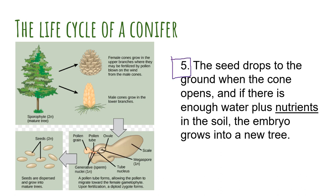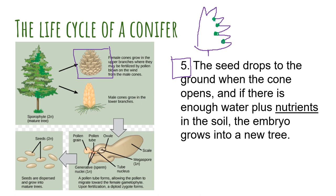Stage five: the seed drops to the ground when the cone opens, and if there is enough water plus nutrients in the soil, the embryo grows into a new tree. These female cones have those spikes, and inside is where the female cells are. At this stage of the cycle, they've already been fertilized by the pollen grain and grown into full-blown seeds. The way the female cone releases these is it actually begins to open up those folds and kind of begins to fold down like an accordion. I'll have a time-lapse video so you can see what I'm talking about. As the female cone begins to open up, it drops those fully formed seeds out into the wind or onto the ground. And if those seeds fall into a place that's suitable for growing, then the new pine tree plant would form.